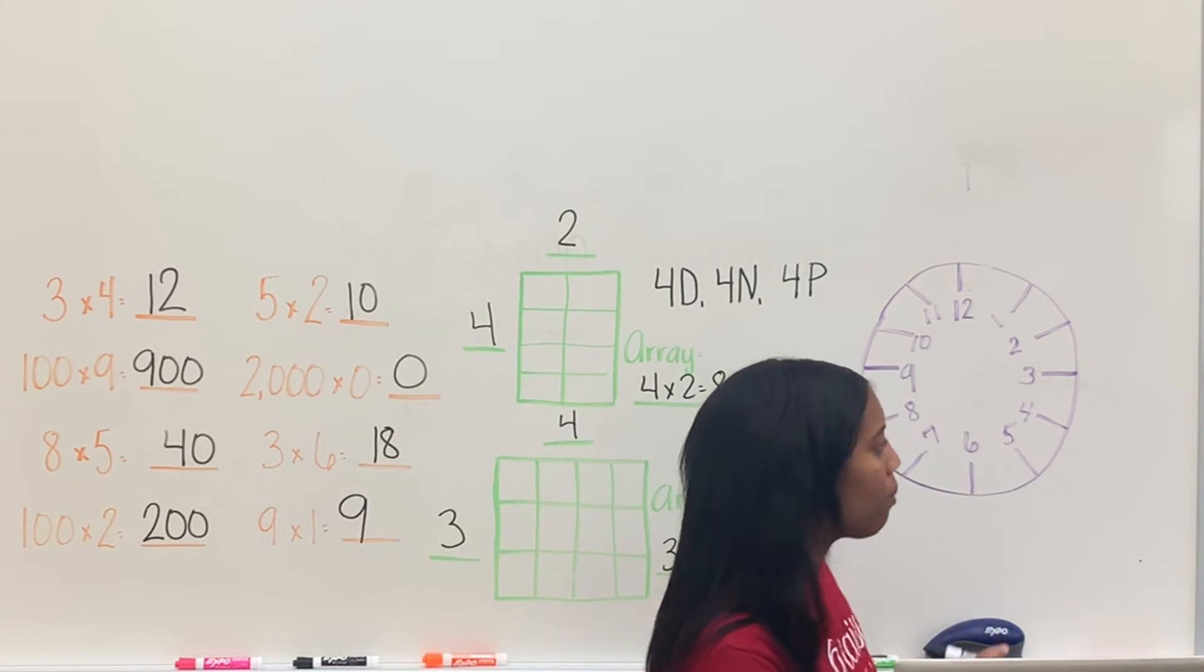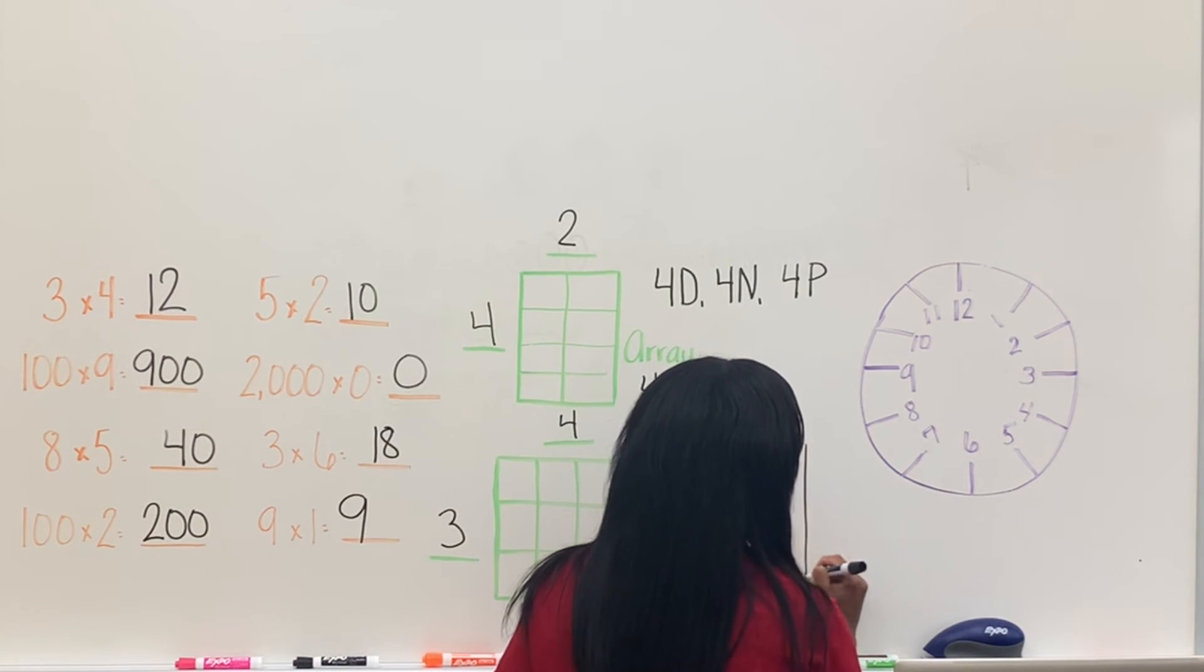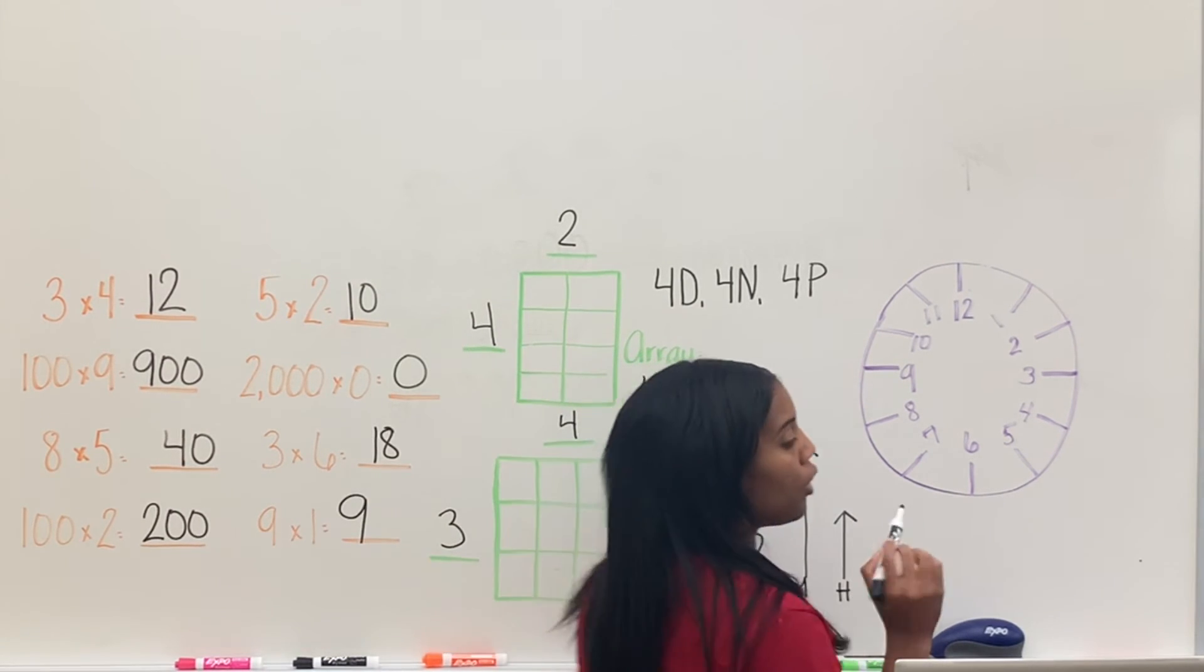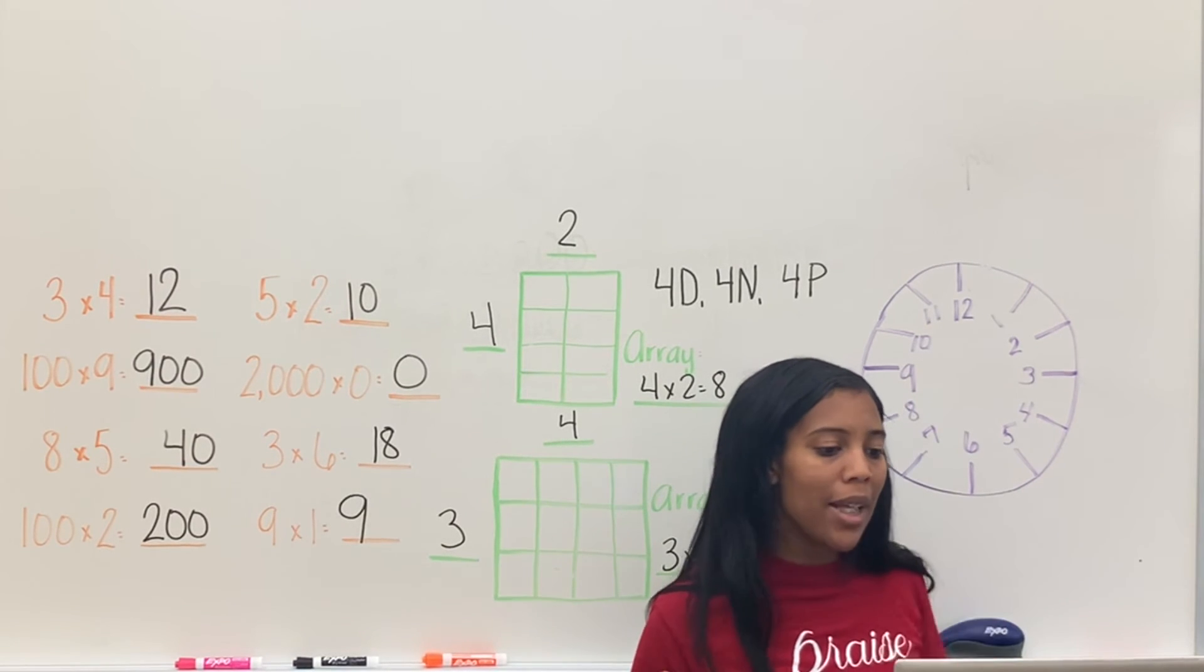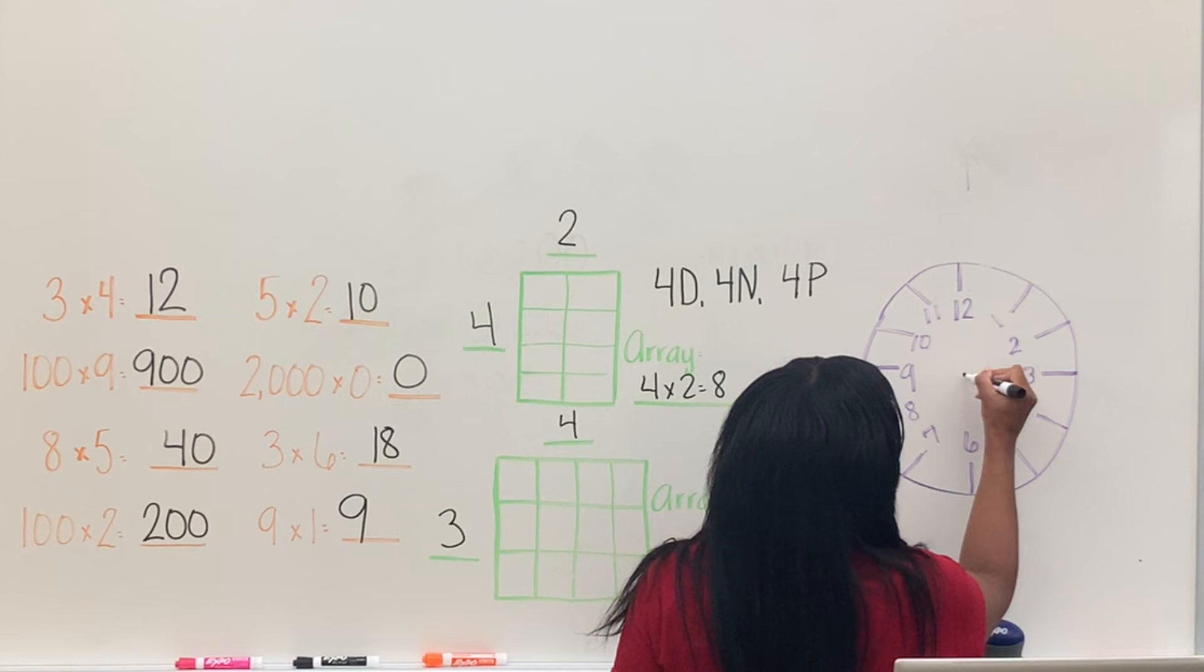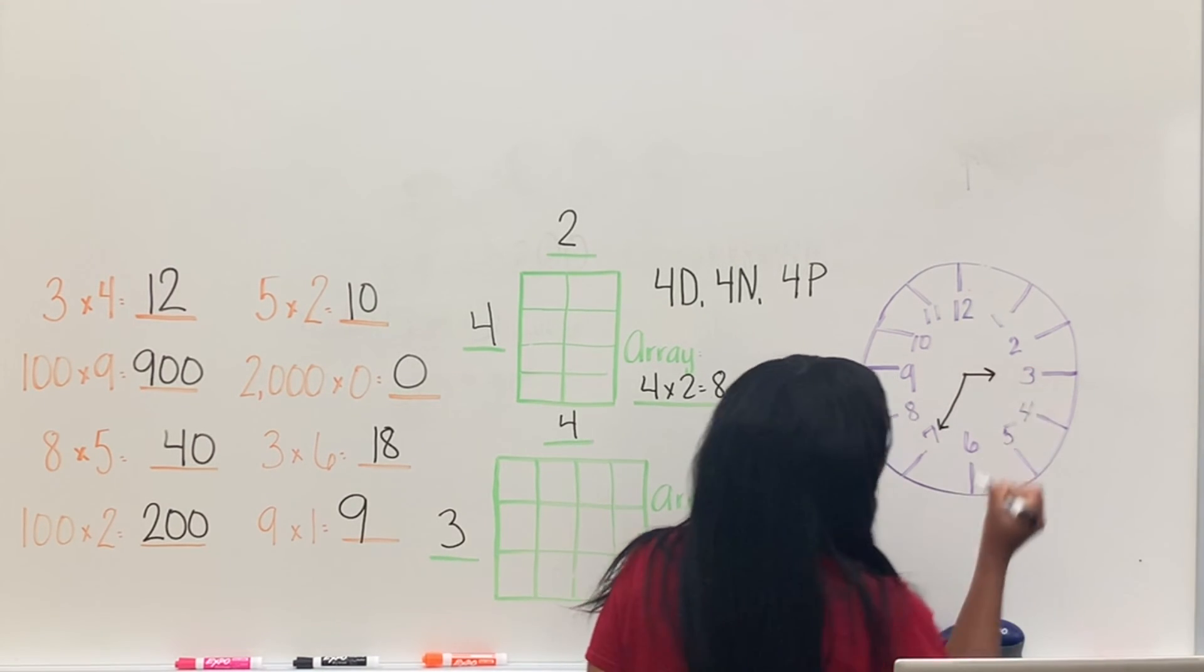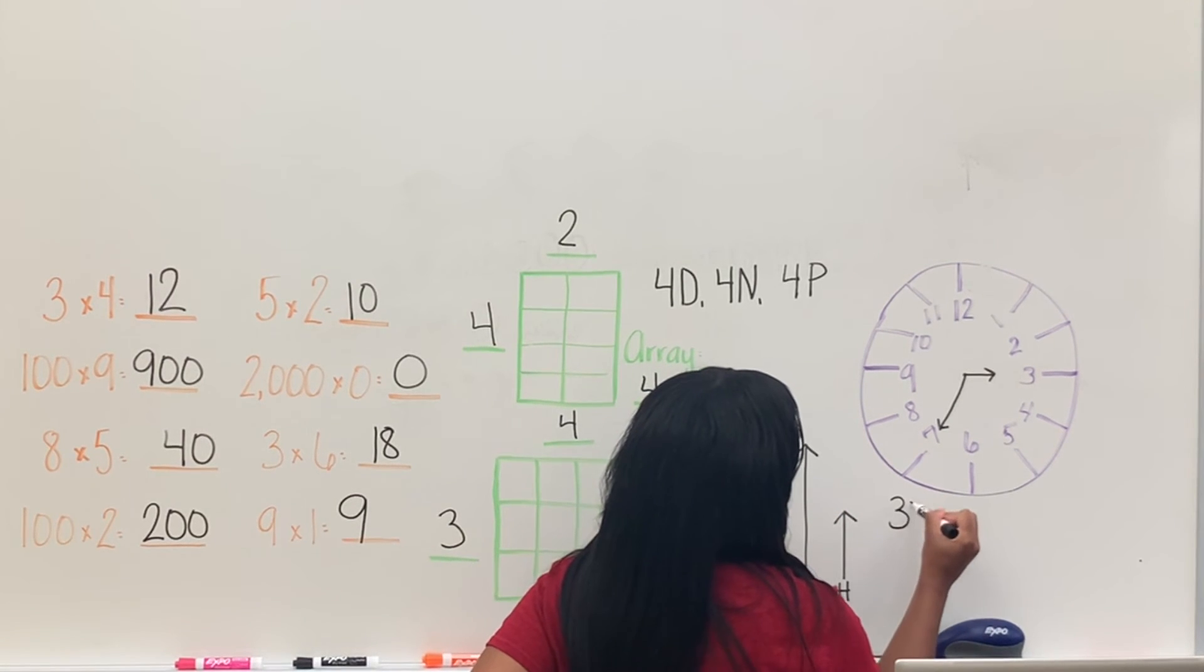Alright, let's go ahead and practice a little bit of time. So remember, we have a long hand, which is the minute, and a short hand, which is the hour. So you have your minute hand, hour hand. Your hour, you just say whatever number it's on. You just say it by the 1. Minute, that's when we count by 5s. We always start by 5s with the 1, and we work our way around. So let me go ahead and put a time. Yeah, that's my favorite one. Okay, what time is it now? 3.35. 3.35.